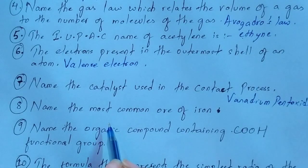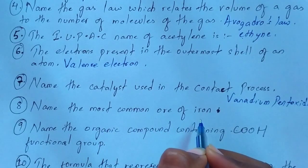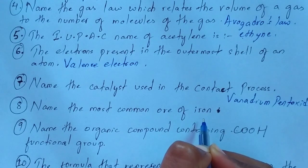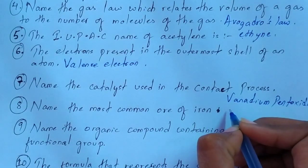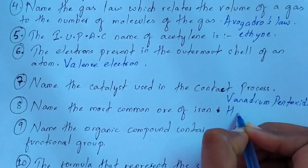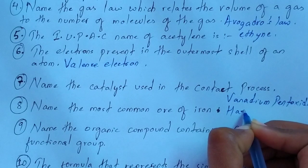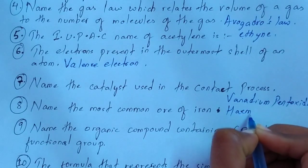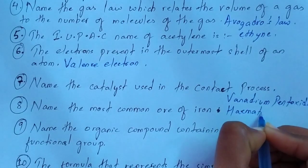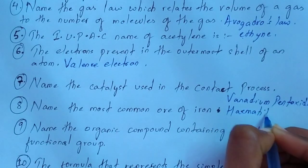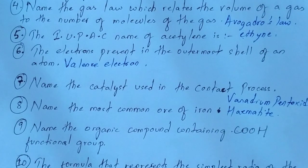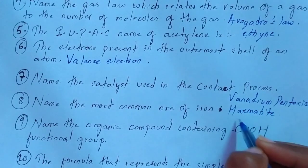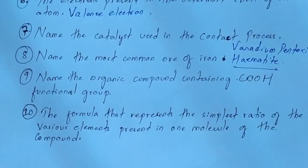Question number 8: name the most common ore of iron. This is also repeated most of the time in board exams. The most common ore of iron is hematite — you must be knowing this. It also appears in your geography subject. The most common ore of iron is hematite.